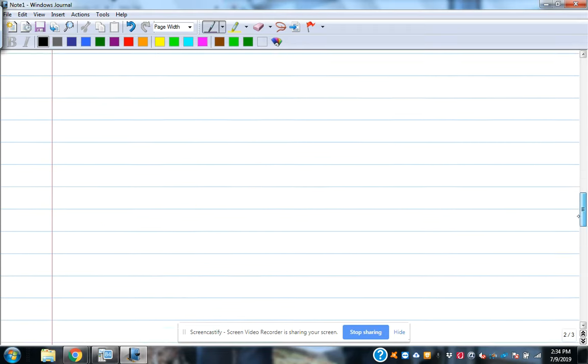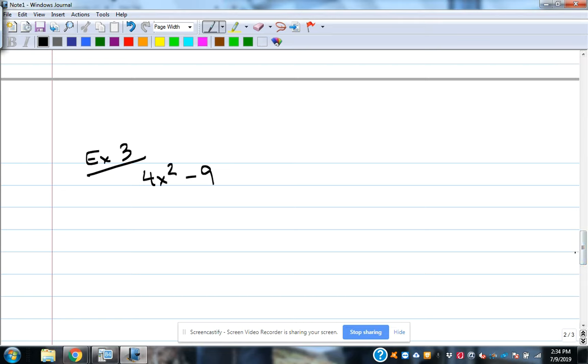Look at the next example. This one only has two terms. It is in the right order. We've got x squared and then a number. So that is in the right order. But since it has two terms, we're looking for one of those strategies, either difference of squares or sum or difference of cubes. Because this has an x squared, we know it possibly could be a difference of squares.